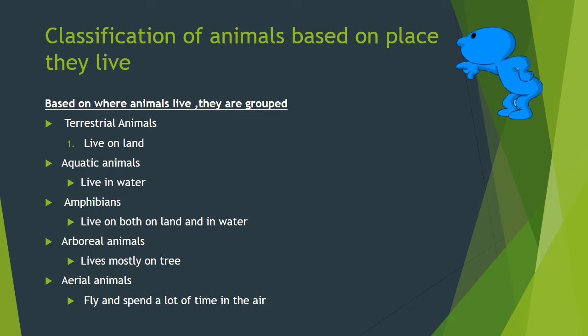Based on where animals live, they are grouped: terrestrial animals live on land, aquatic animals live in water, amphibians live on both land and in water, arboreal animals live mostly on trees, and aerial animals fly and spend a lot of time in the air.